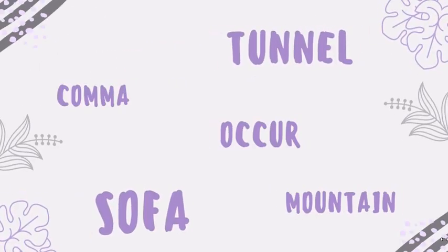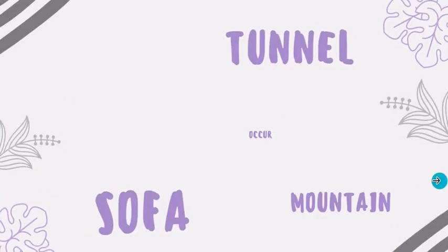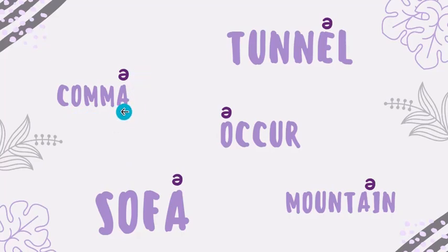Let's read these words: comma, tunnel, akhar, sofa, mountain. In all these words we have schwa. Just have a look here. If I say the word comma — K, O, kha, M — this is the short vowel sound, but letter A is saying 'uh' here. So it's a schwa.